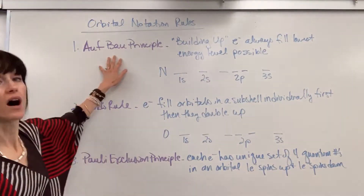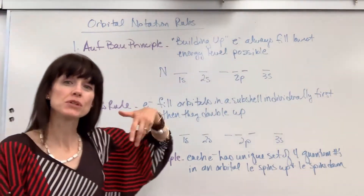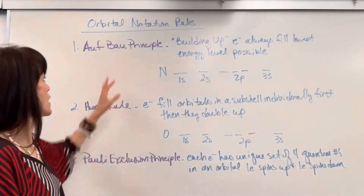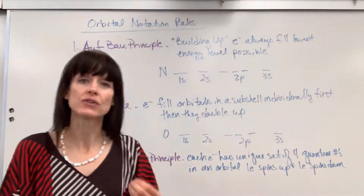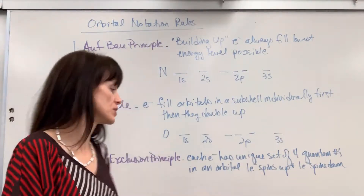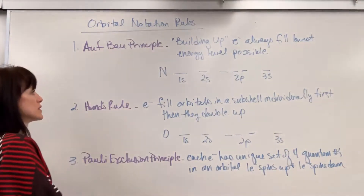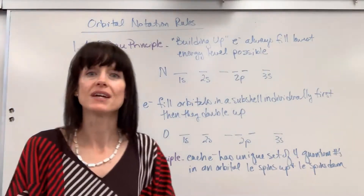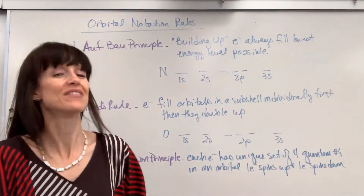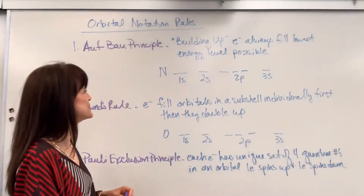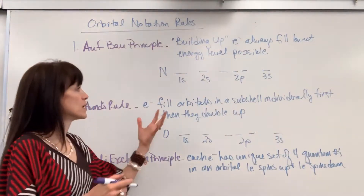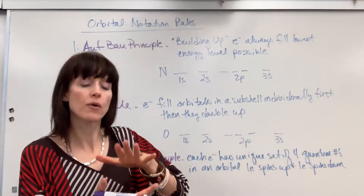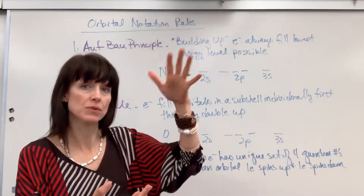The first rule is called the Aufbau Principle. That's a German term for 'building up,' and that will help you remember it. The Aufbau Principle tells us that electrons always fill the lowest energy level first. I have nitrogen here — nitrogen has seven electrons, and those electrons will always fill the lowest energy level, and once that energy level is filled, it moves up.